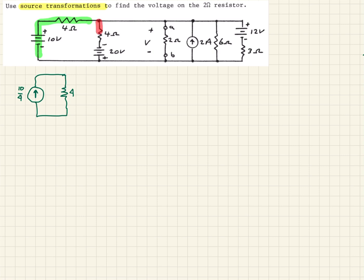Next we look at this leg and do the same thing. This time we'll have a current source going down, because the positive side is down, so that'll be 20 divided by 4. Again, we put that in parallel with the 4-ohm resistor.